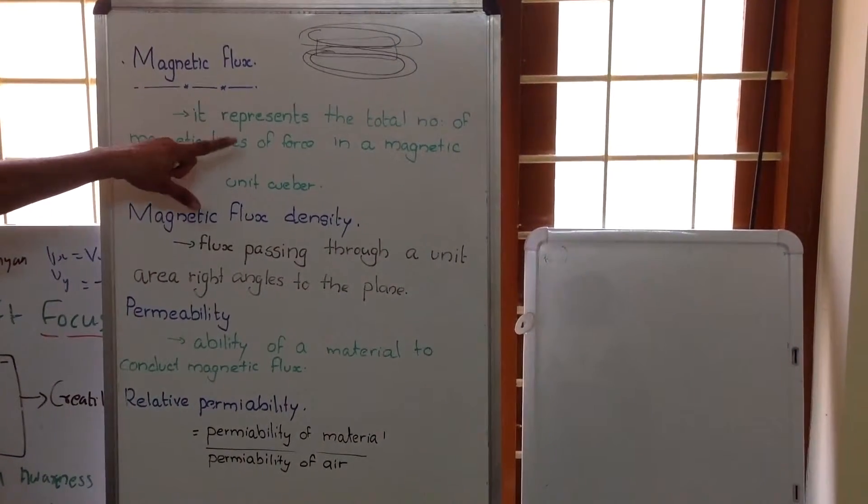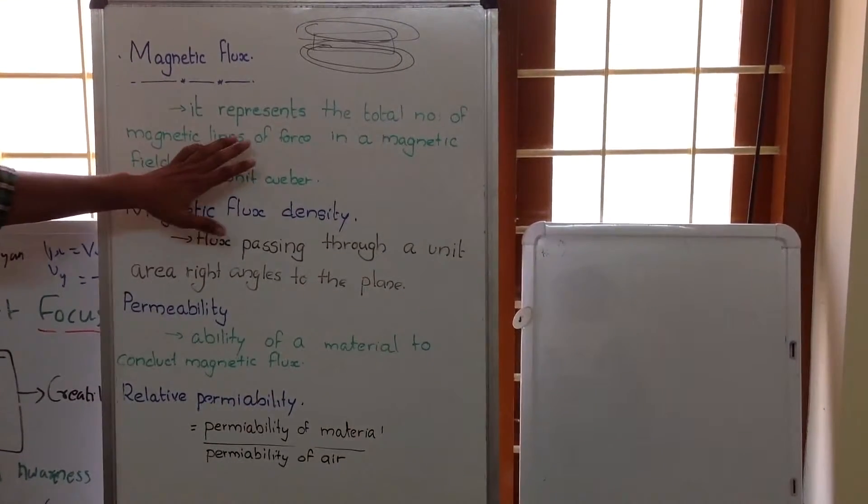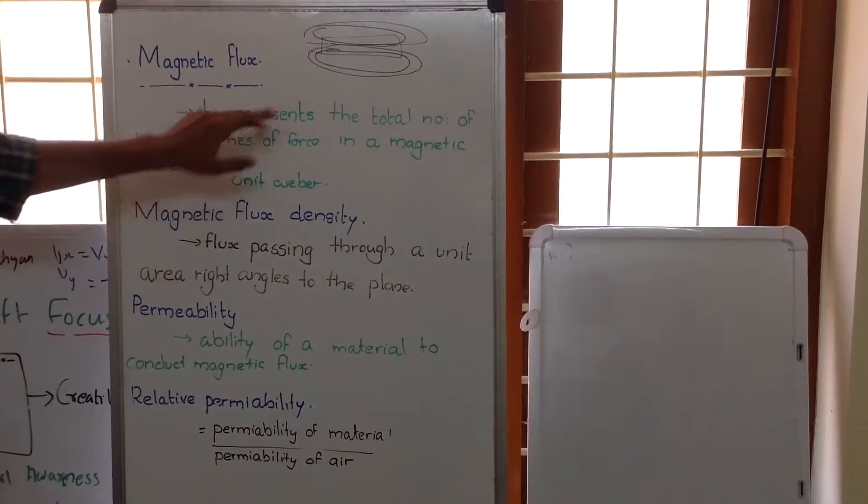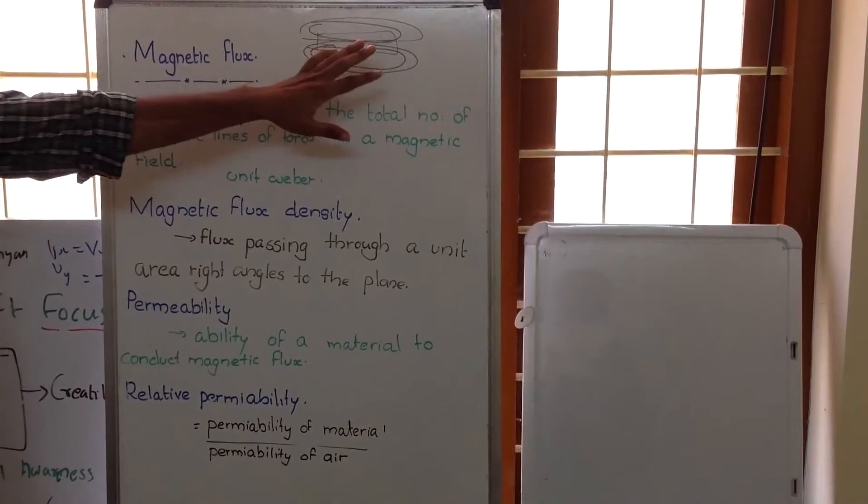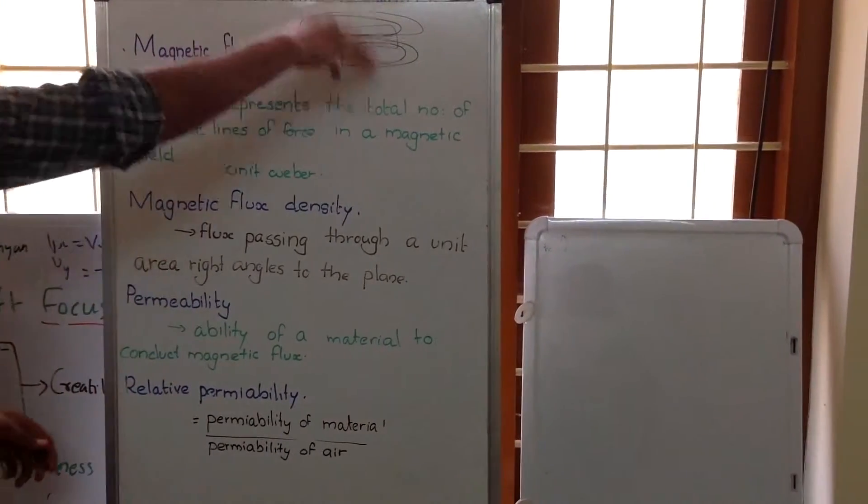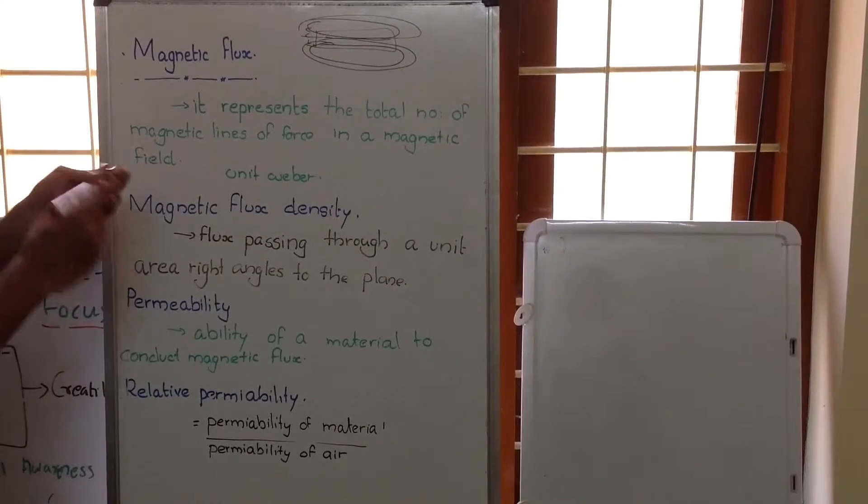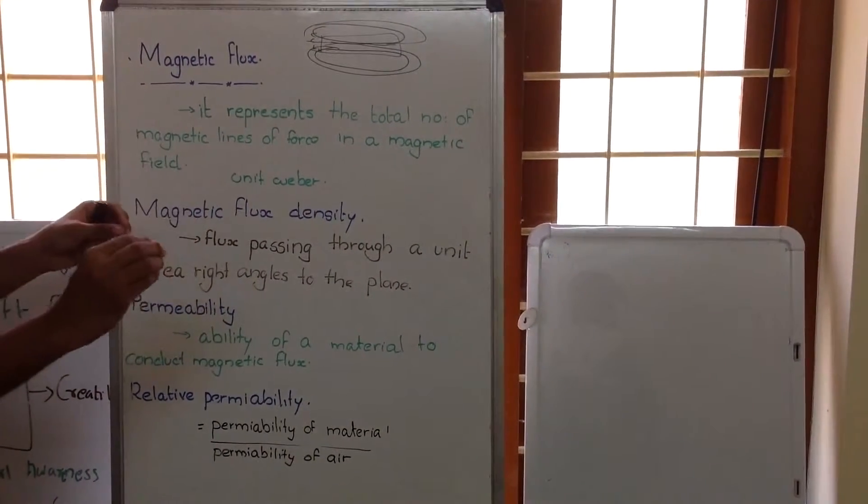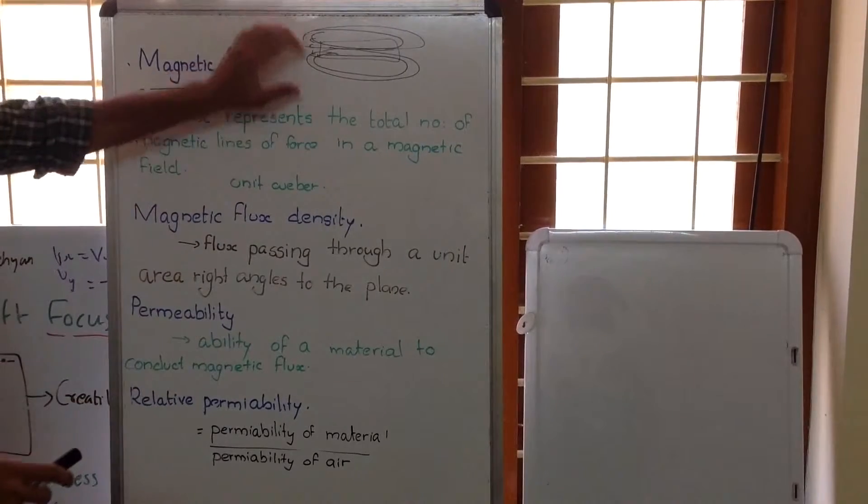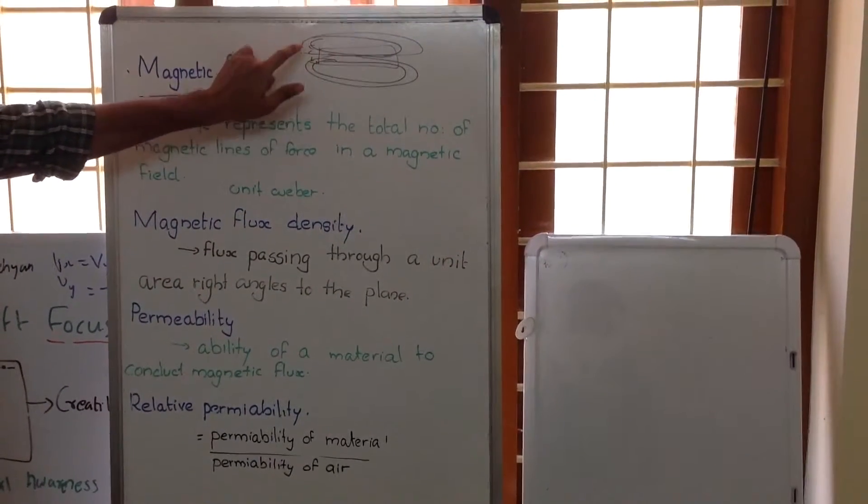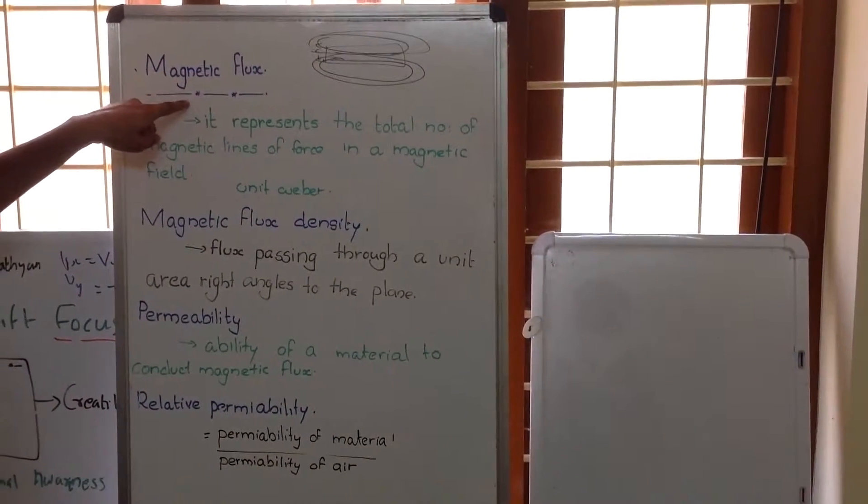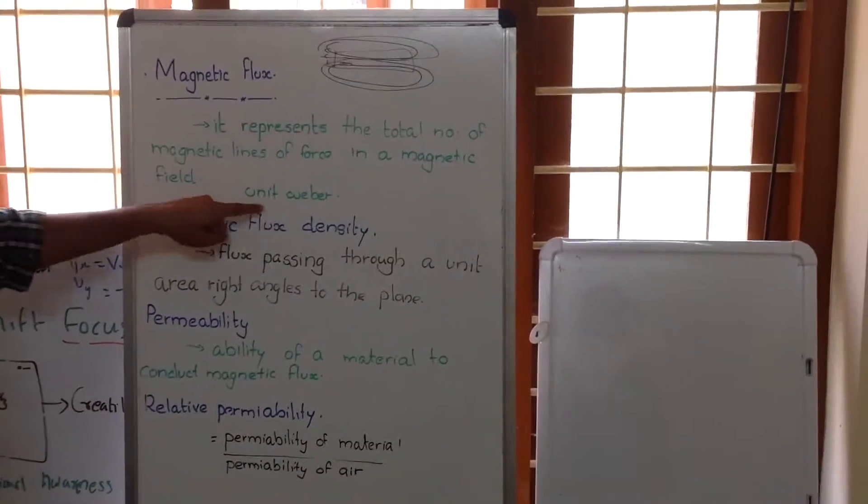Magnetic flux represents the total number of magnetic lines of force in a magnetic field. Consider a bar magnet here with magnetic field lines. If we introduce a particular term to represent the total number of magnetic field lines in a particular area, that can be called magnetic flux and its unit is weber.